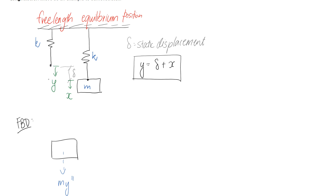As a result of the mass accelerating downwards, the spring is going to try and oppose that — it's going to try and pull it back up. We're going to call that force ky, for k the spring constant and y the amount it's been displaced. So if this pulls down a certain distance, the spring is going to end up extending that distance y. The other thing I need to include is the mass's weight, which is going to act downwards through the centre of gravity — that's going to be mg.